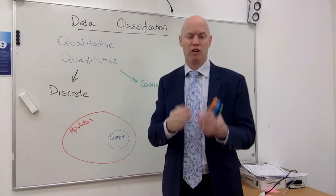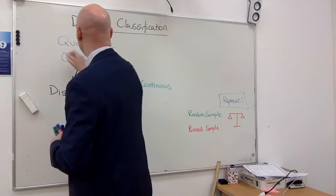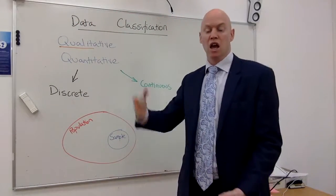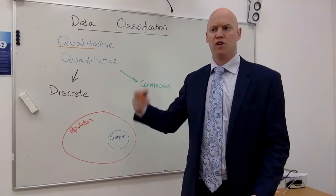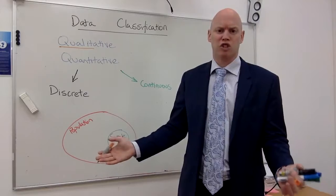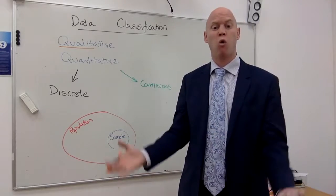Qualitative, that word comes from qualities. So what are the qualities of people? Kind, mean, blue eyes, brown eyes, blonde, brunette, bald, too sexy for a shirt. Whatever it is, they're qualities.